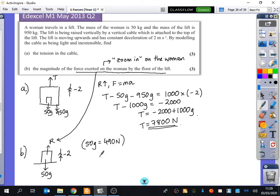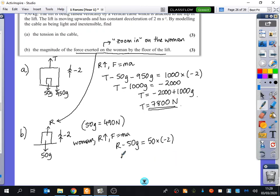So I'm just going to do another F equals MA. But this time, it's for the woman. And so we get R minus 50G equals the mass times the acceleration. So we get R minus 50G equals minus 100. So R is equal to minus 100 plus 50G. So R is 390.